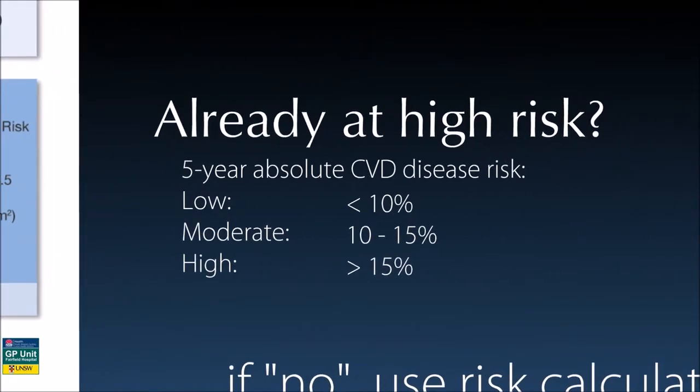It is important that when you see the terms low risk, moderate risk, and high risk in the literature, these qualitative descriptors are not being used subjectively. In Australia, we describe cardiovascular disease absolute risks over a 5-year period, whereas other countries describe these risks over 10 years. In the Australian context, high risk is greater than 15% probability of developing symptomatic cardiovascular disease in the following 5 years.